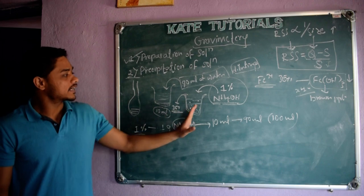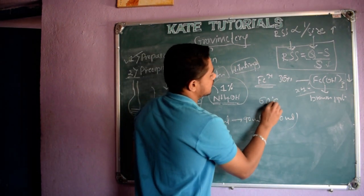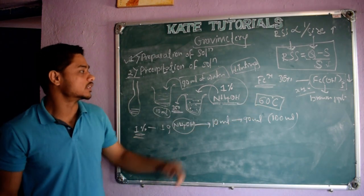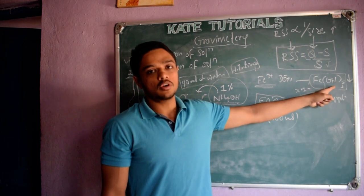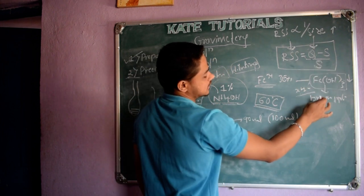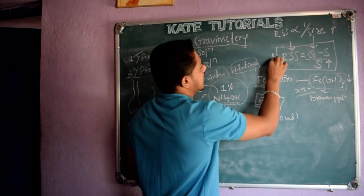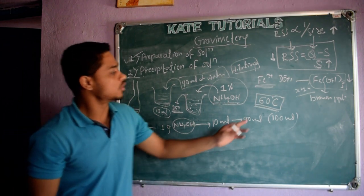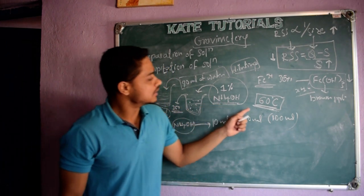And the second thing is, this process is carried out at elevated temperature — we carry out this reaction around 60°C. The question is, why do we carry out this at 60°C? If we carry out at high temperature, the solubility of this crystal will be more. If solubility is more, again RSS will be less. If RSS is less, the size will be more. If size is more, surface area will be less. If surface area is less, contamination will be less. So, we are carrying out at elevated temperature. I explained why dilute solution and also why at elevated temperature.